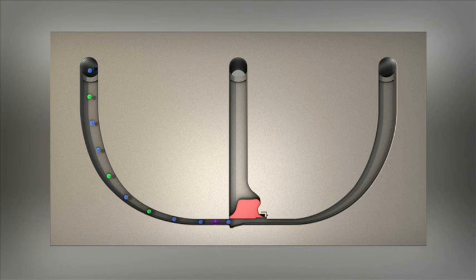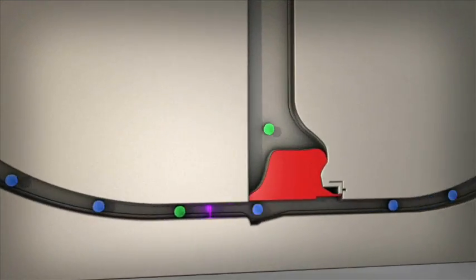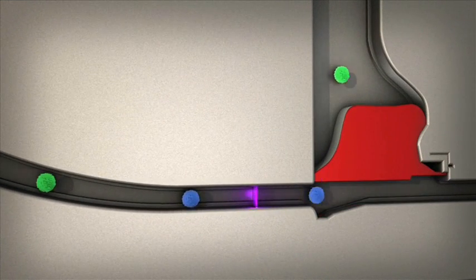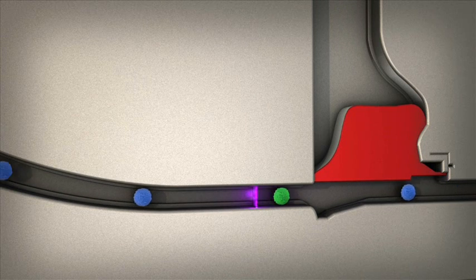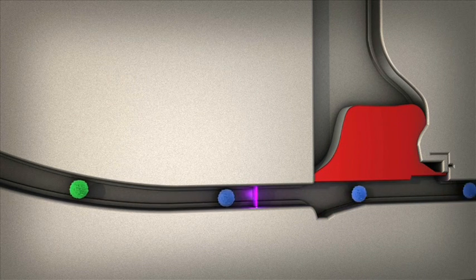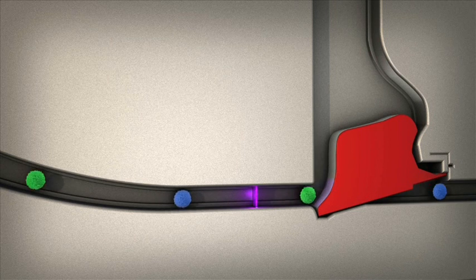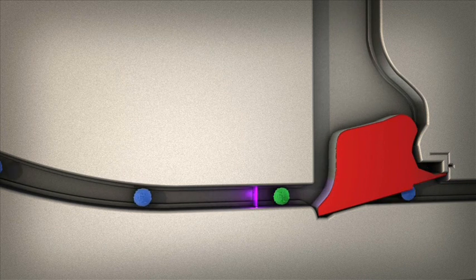The cell sorter works by the cells moving down a pipe that's a fraction of the width of a human hair. As they flow along, we interrogate them with a laser. If you see the right sequence of colors, then we open a door essentially right in front of the cell.